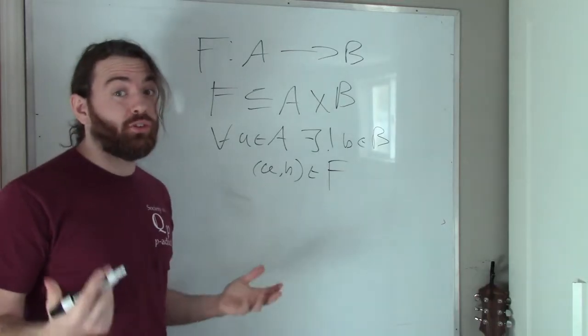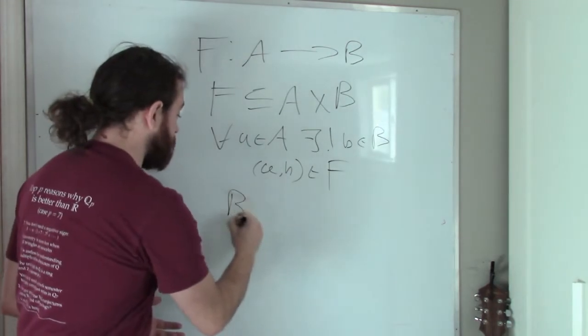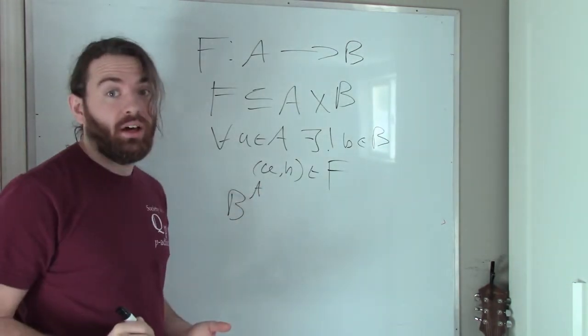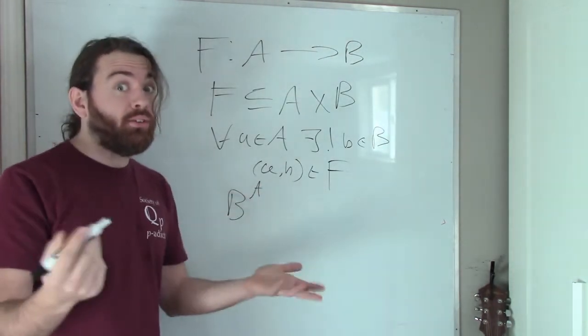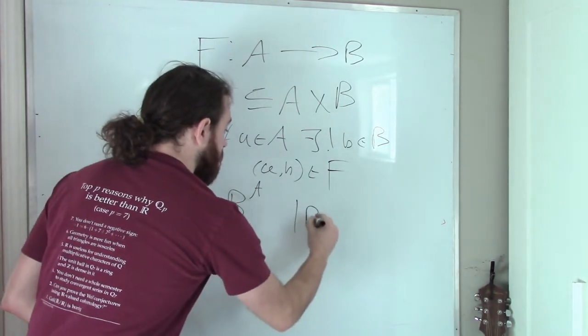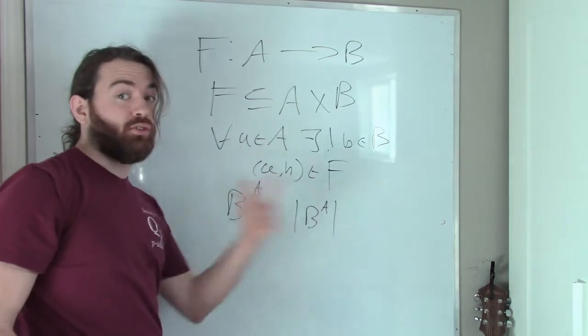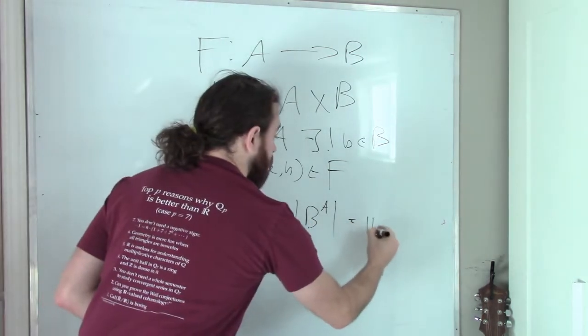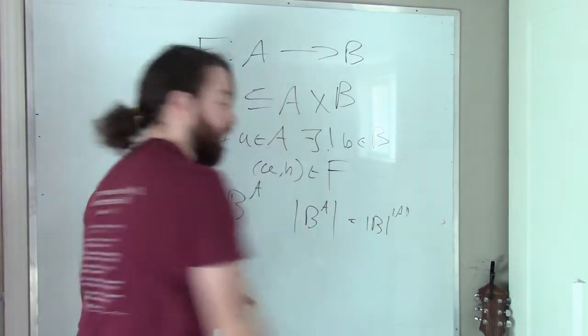We denote the set of functions from A to B as B with an A up in the exponent, precisely because, and this even holds for infinite cardinals, the cardinality of the set of functions from A to B is the cardinality of B to the power of the cardinality of A.